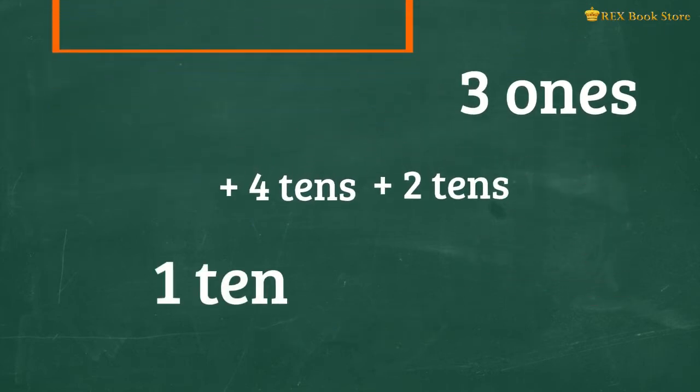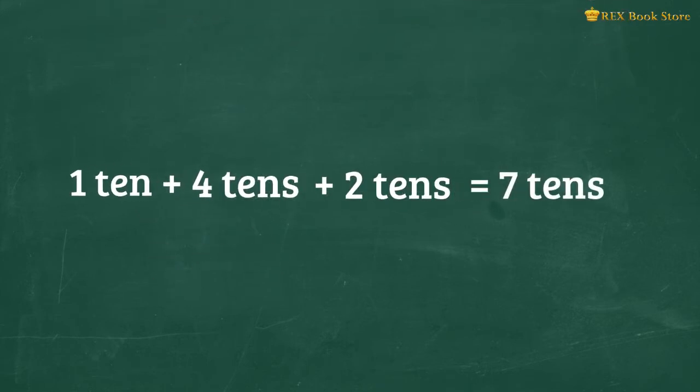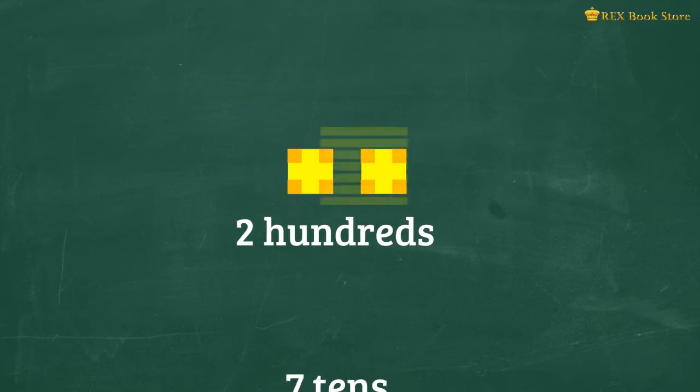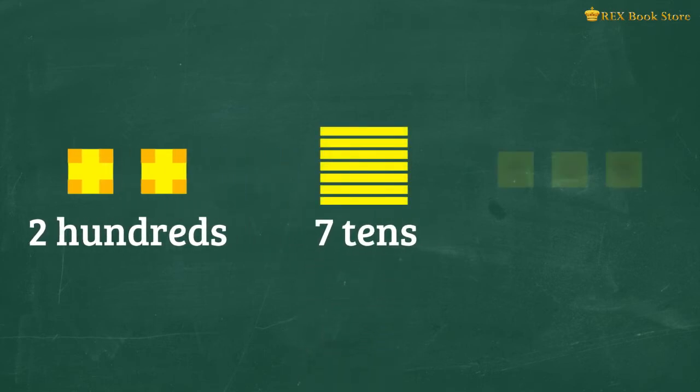So now, it's time to add the tens. 1 ten plus 4 tens plus 2 tens equals 7 tens. Lastly, we have 2 hundreds as 2 flats. What we have is 2 hundreds, 7 tens, 3 ones.